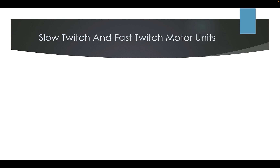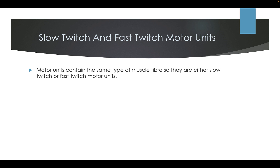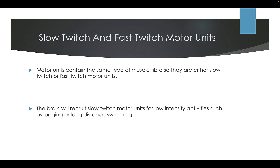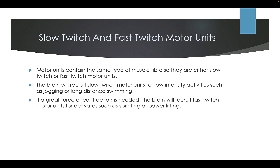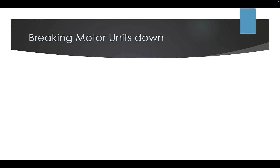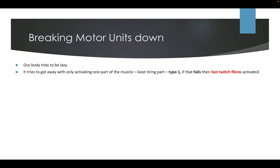Motor units contain the same type of muscle fibres, so they are either slow twitch or fast twitch motor units. The brain will recruit slow twitch motor units for low intensity activities such as jogging and long distance swimming. If a greater force of contraction is needed, the brain will recruit fast twitch motor units for activities such as sprinting or power lifting. Our body tries to be lazy — it tries to get away with only activating the least tiring part, so Type 1 first.